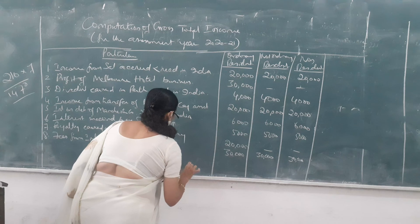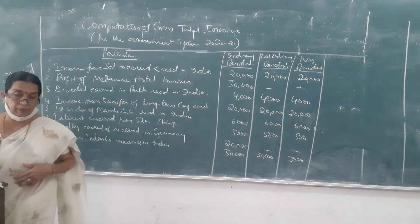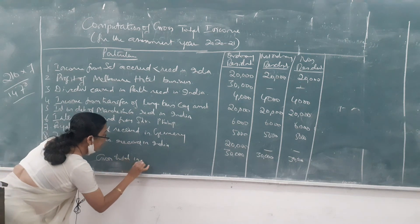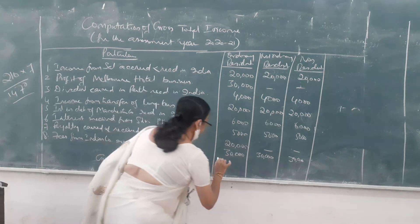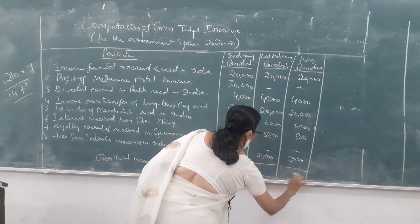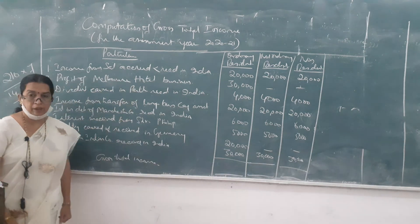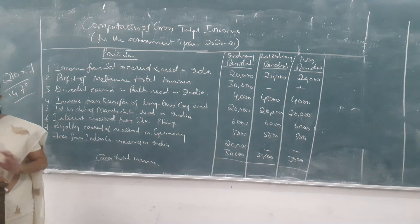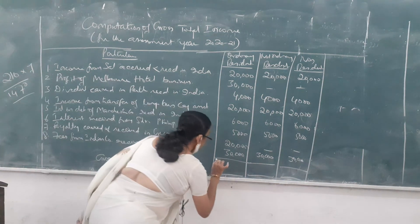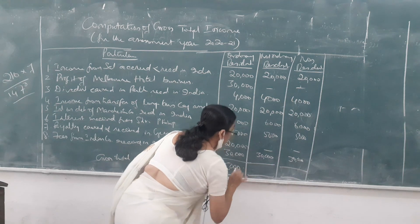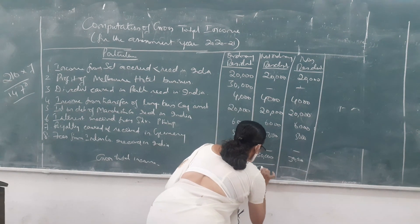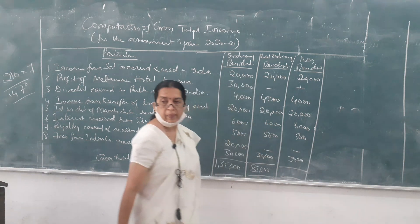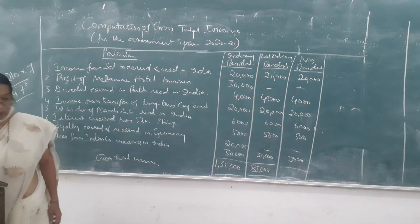Now find out the totals, that is the gross total income. For the ordinary resident, the gross total income is 1,35,000. For the not ordinary resident and non-resident, it is 85,000 each.